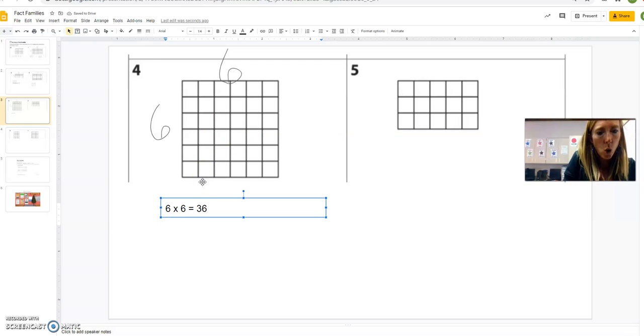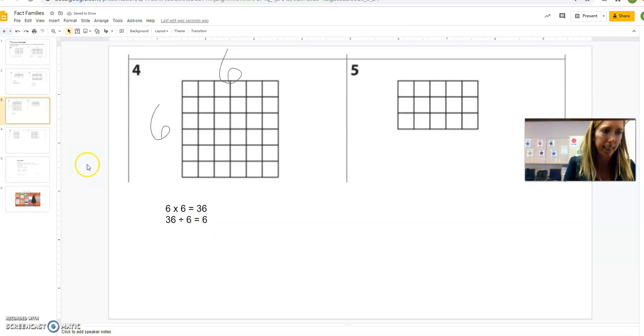And now, if I rearrange it, it would still be 6 times 6. So actually, in this family, I go straight to division. Control V, my division sign, and divide it by 6. So 36 divided by 6 is going to be 6 because 6 times 6 is 36. That's how division and multiplication work. Isn't that nice?